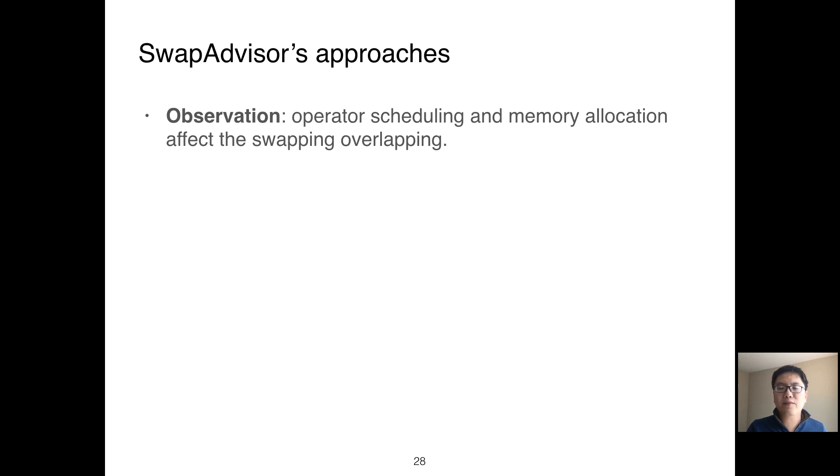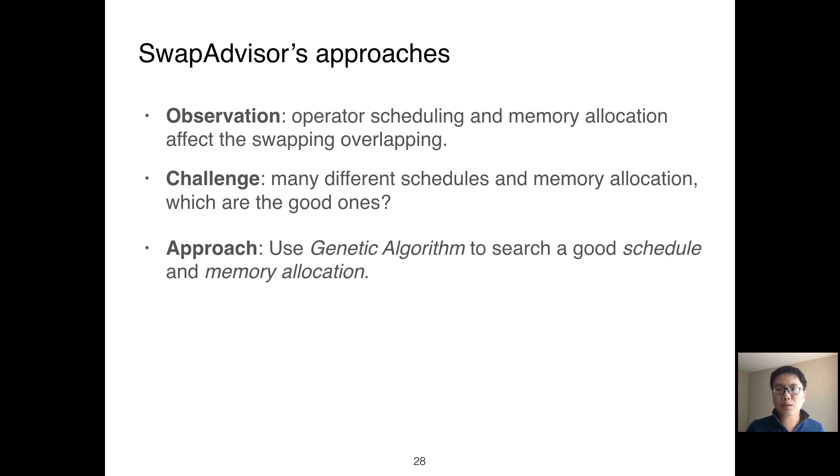SwapAdvisor utilizes the previous observation to optimize swapping. However, how do we find a good schedule and memory allocation? SwapAdvisor uses genetic algorithms to search for a good operator schedule and memory allocation which minimizes swapping overhead. And SwapAdvisor creates three GPU streams: one for computation and the other two for swapping in and swap out. This allows SwapAdvisor to overlap swapping communication with computation.